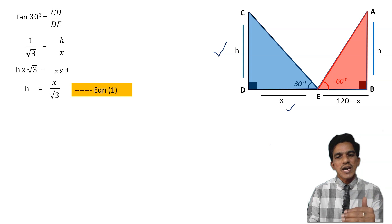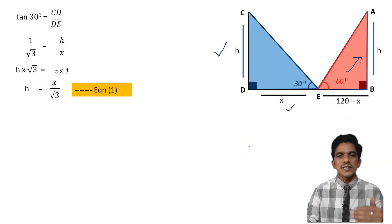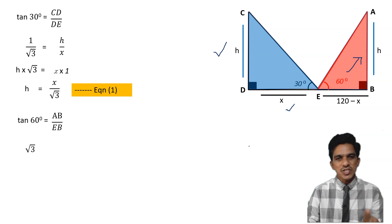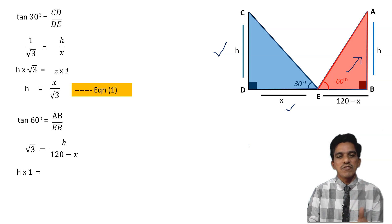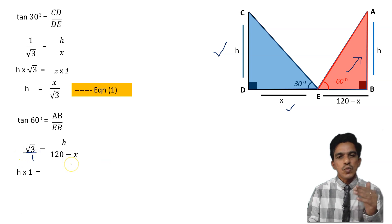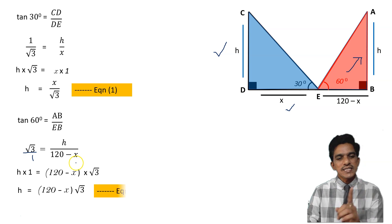Now let us consider the second triangle, triangle ABE. The angle here is 60 degrees, the opposite side is H and the adjacent side is 120 minus X. Let us write tan 60, which is opposite by adjacent, AB by EB. We know that tan 60 is root 3. So root 3 equals H divided by 120 minus X. Cross multiplying, H equals 120 minus X into root 3. Take this as equation 2.